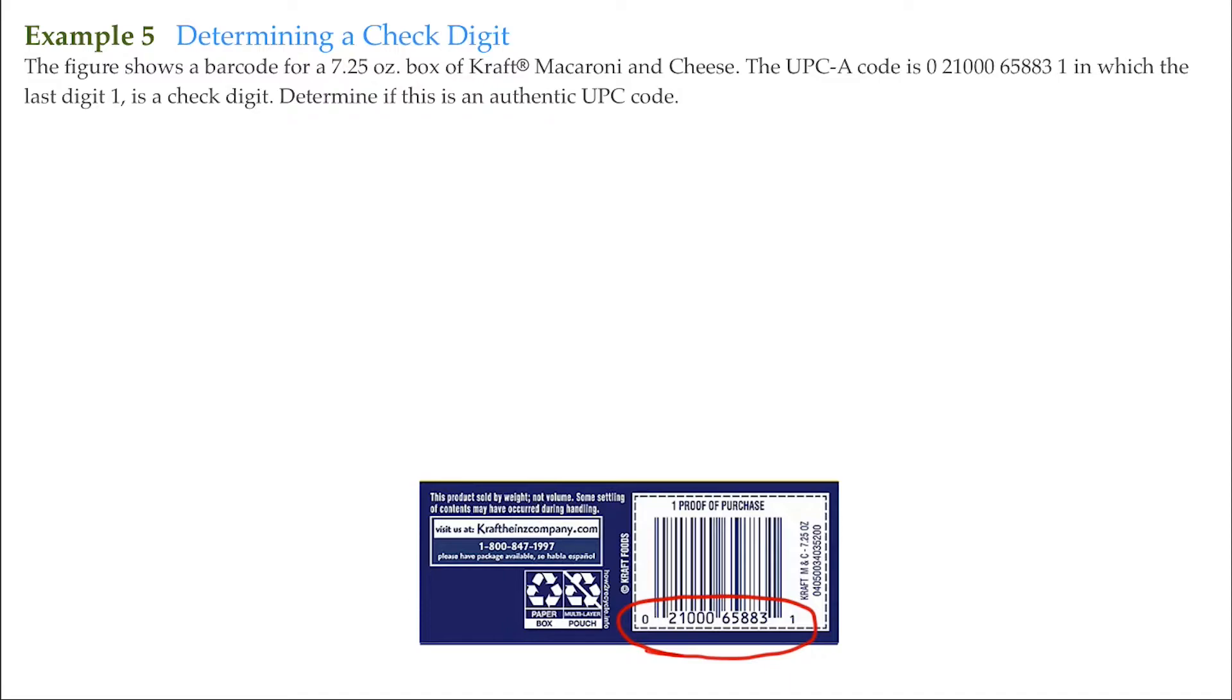The UPC-A has a particular weighted scheme. That scheme is d sub 12, which stands for the twelfth digit in the UPC code. The twelfth digit here is the check digit.